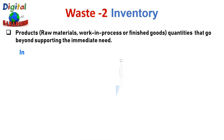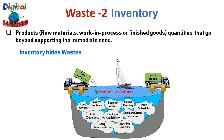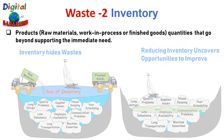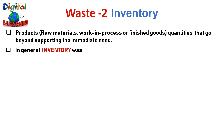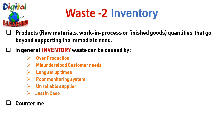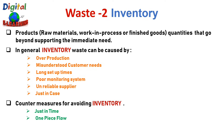Any material you have but are not working on right now is waste — you have already paid for it, but it is sitting in inventory, adding around 50% to 60% of its total value in carrying cost. Inventory hides all your waste, and reducing inventory uncovers opportunities to improve. Inventory can be caused by overproduction, misunderstood customer needs, long setup time, poor monitoring systems, and unreliable suppliers. Countermeasures include just-in-time philosophy, one-piece flow, takt time, Kanban, and SMED — Single Minute Exchange of Dies.